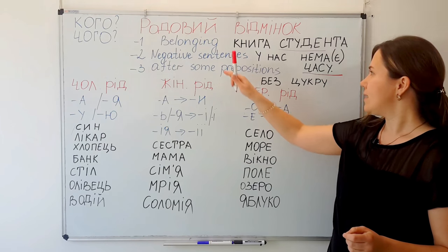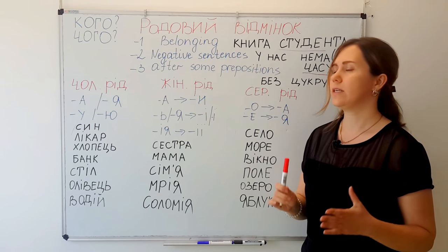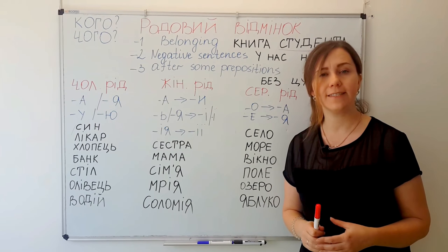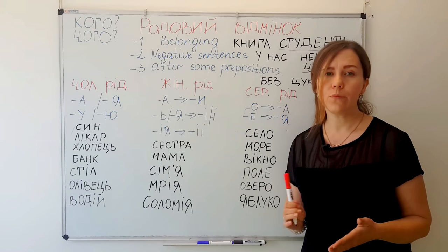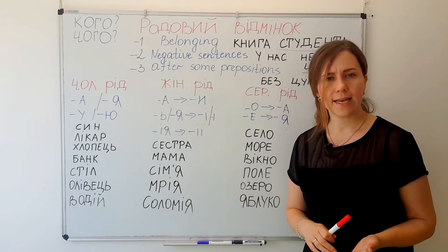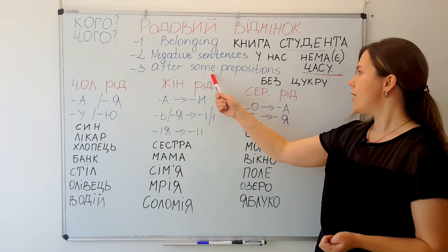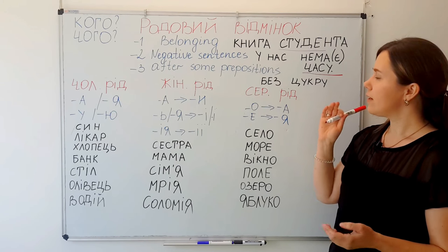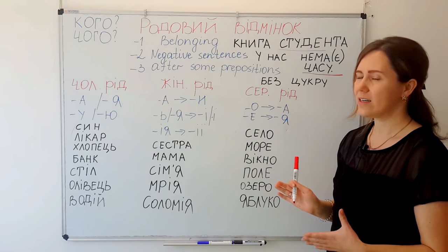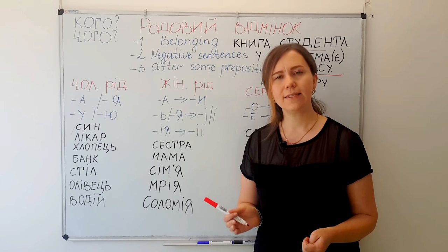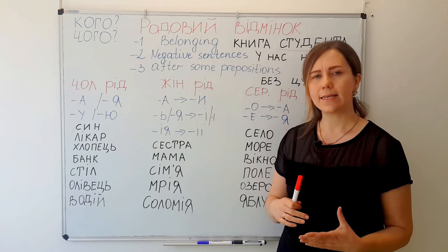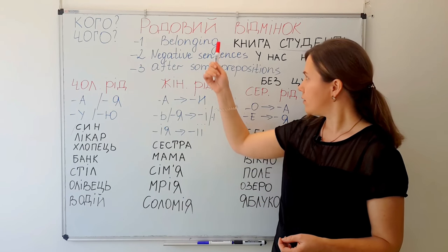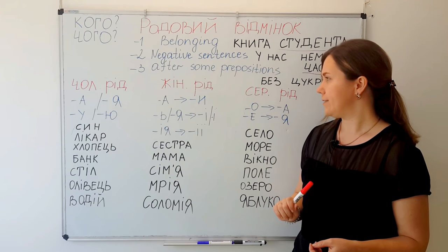So these are the three main uses of the genitive case in Ukrainian: belonging or possession, some negative sentences, and after some prepositions. Now let's look at the endings — the hardest part — what endings does a noun get in the родовий відмінок genitive case.